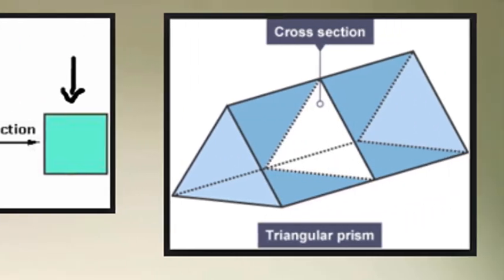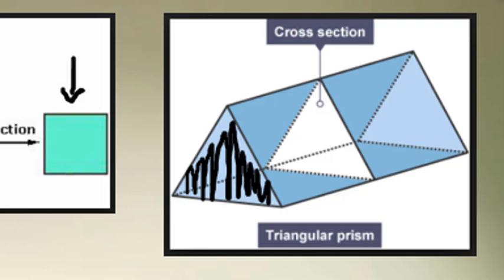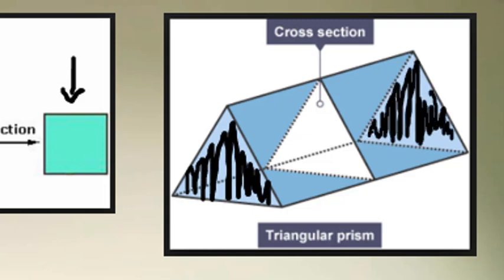Now here we have a triangular prism. It's a prism because it has two parallel bases. So there's one base, there's one base. And if you would imagine slicing through, let's say that we slice down through this.